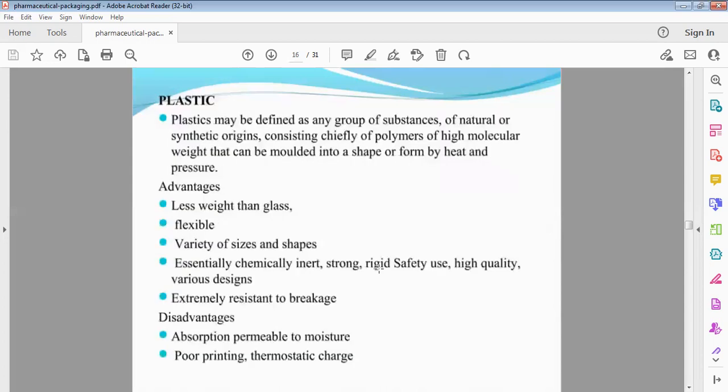Plastics. Group of substances, natural or synthetic, consisting of polymers of high molecular weight that can be molded into shape by heat and pressure. Advantages - less weight than glass, flexible, variety of sizes and shapes, essentially chemically inert, strong, rigid, safety use, high quality, various designs, extremely resistant to breakage.